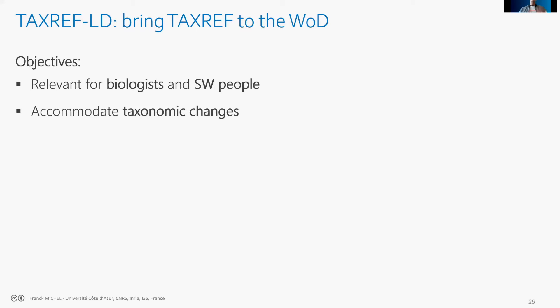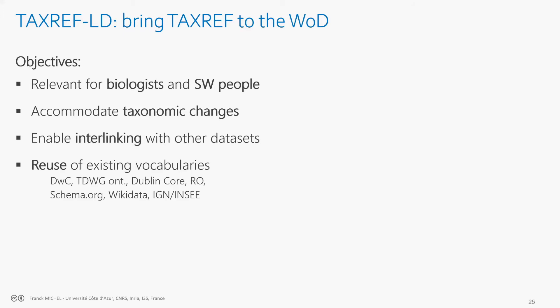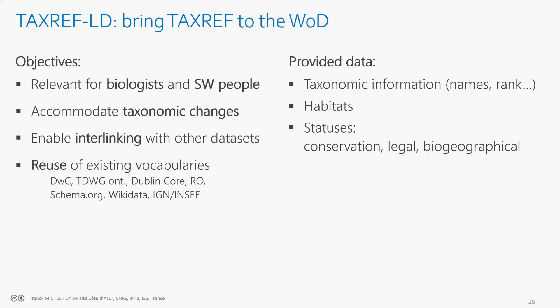A second goal was to accommodate taxonomic changes — recombinations of names where today a species has one name and tomorrow it may have another because new scientific evidence shows it is the same as another species. The model must handle these changes, which occur every day. We also focused very much on linking — having a dataset easily interlinked with other datasets and other taxonomic registers. Lastly, we made a great effort to reuse existing vocabularies, coining new terms only when needed.